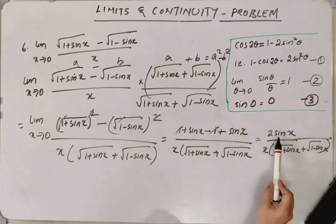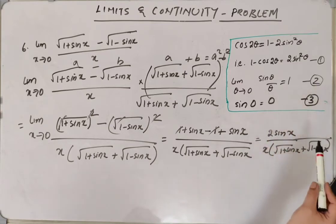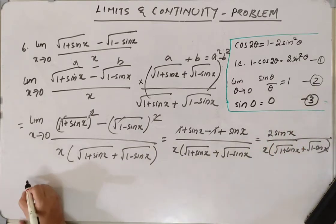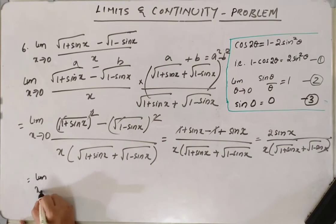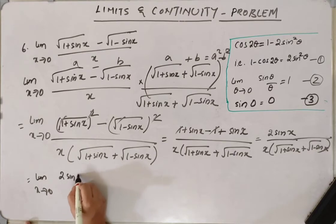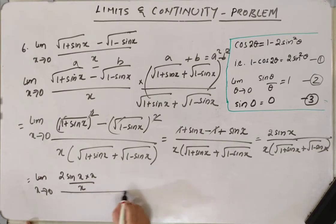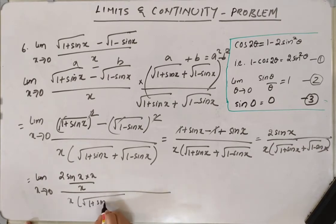Now we can get 2 sin x in the format of sin theta by theta, by multiplying and dividing by 2. 2 sin x, 2 sin x into x by x, x into root of 1 plus sin x.